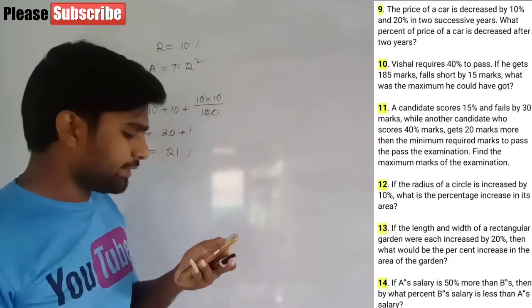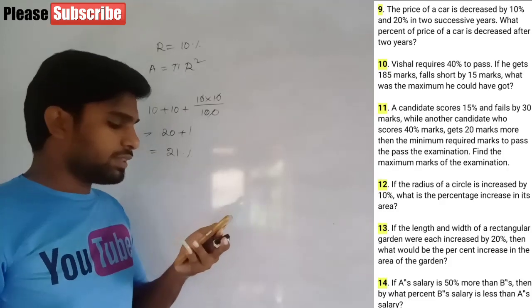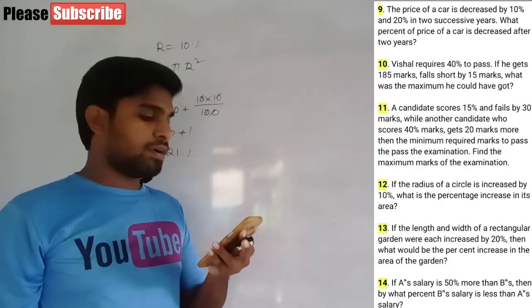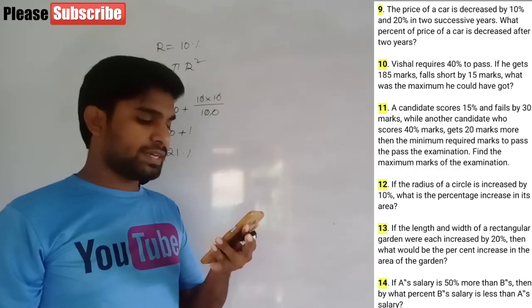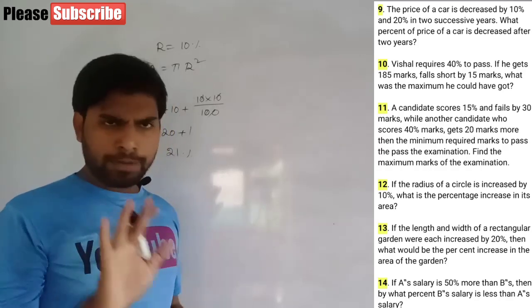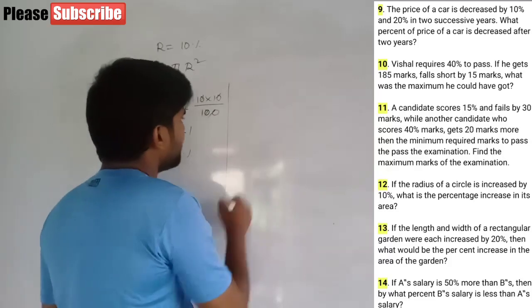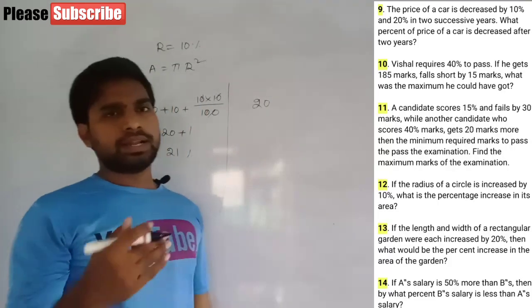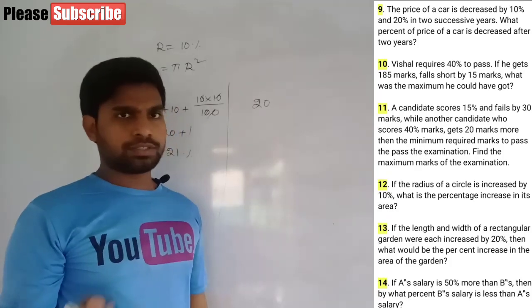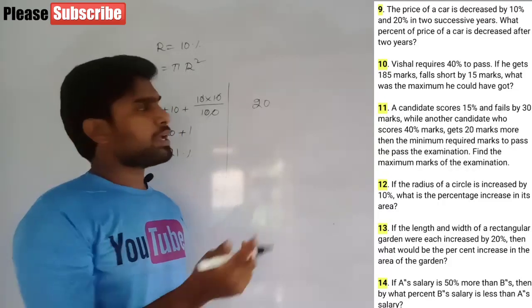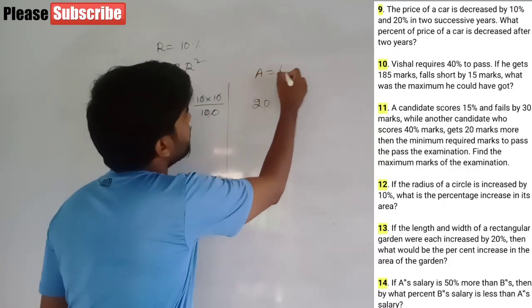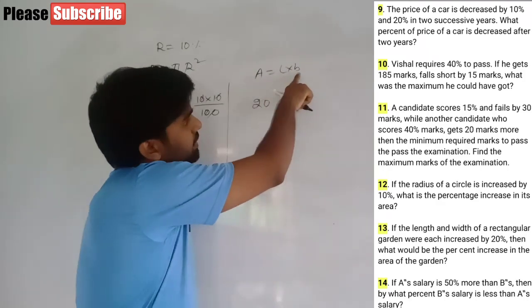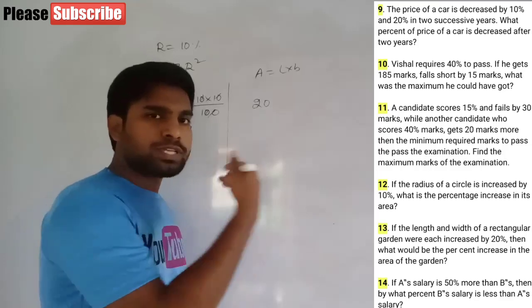Question 13: if the length and width of a rectangle are each increased by 20%, what would be the percentage increase in the area? Rectangle area equals L into B. Here both length and width get 20% increase — two successive increases.